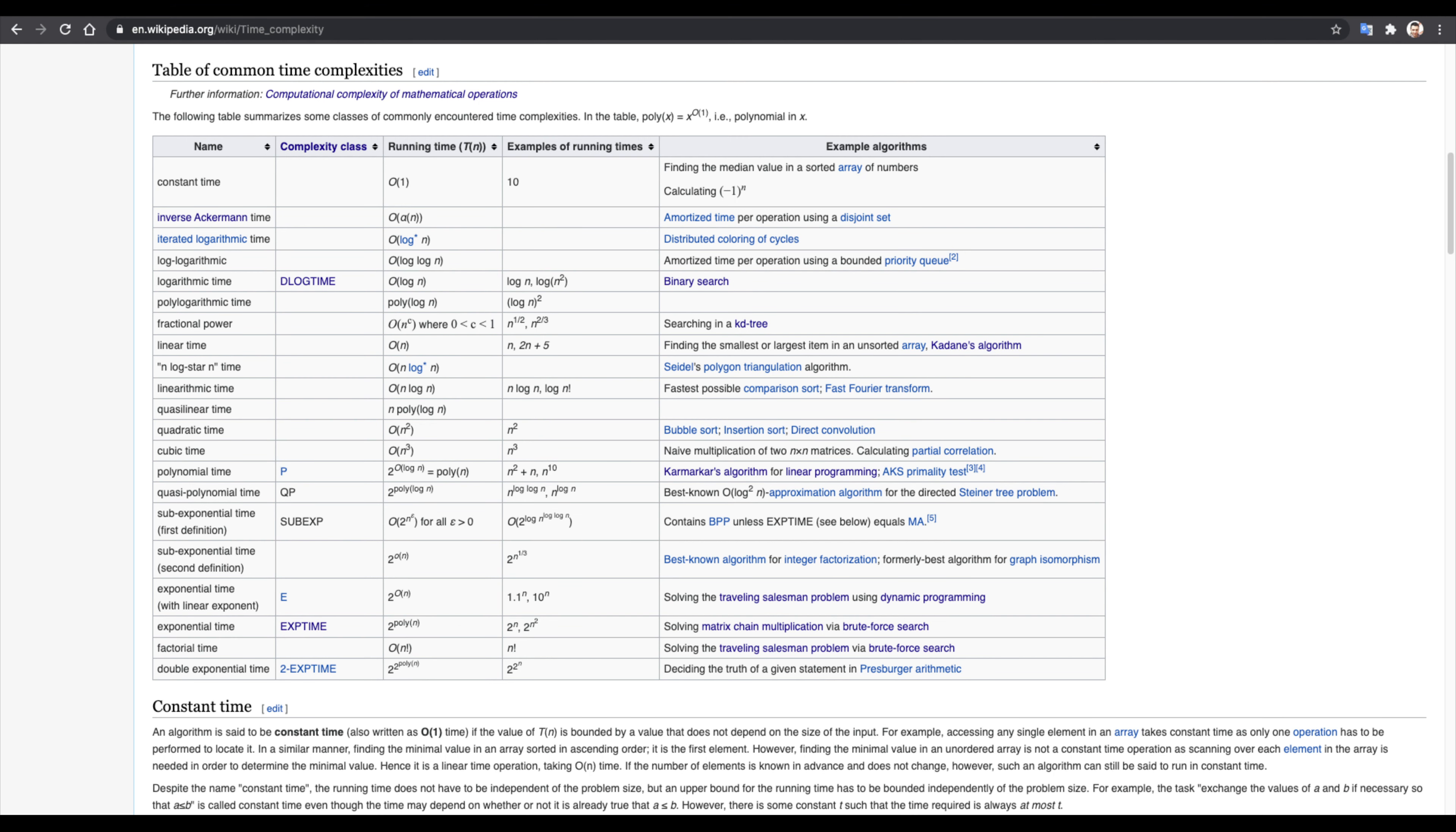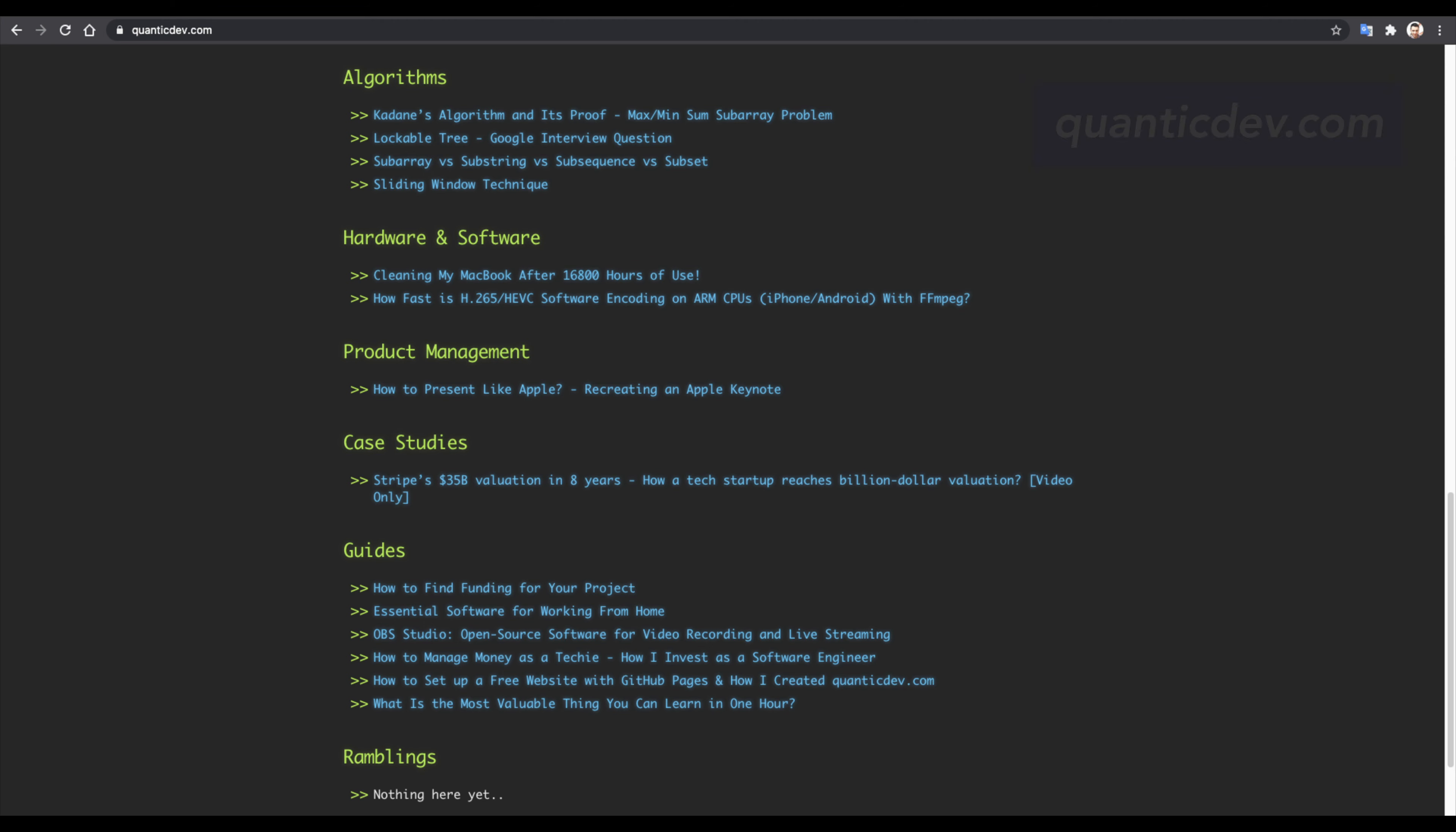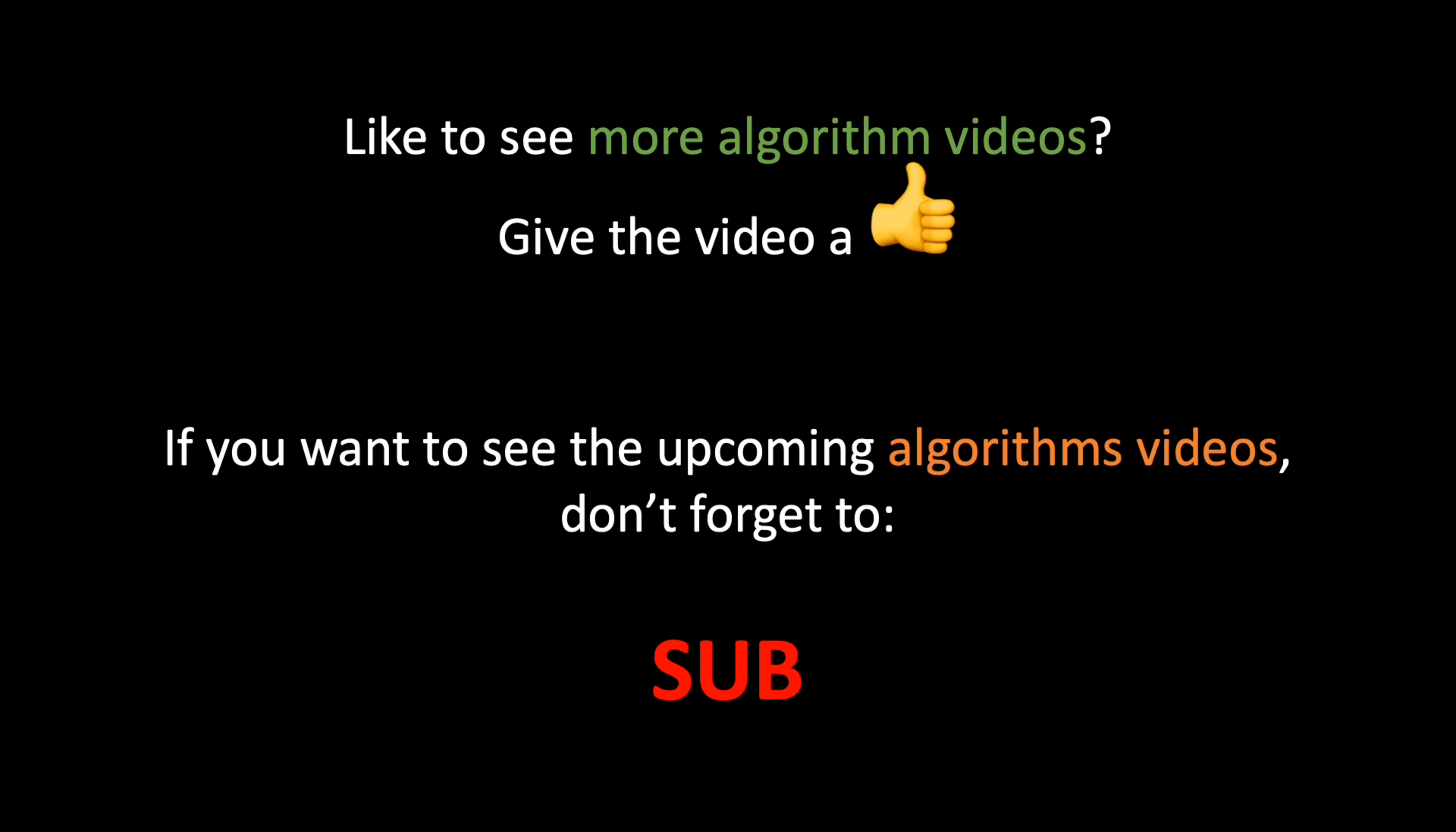Conclusion. Big O notation list goes longer than what I covered here. If you want to see the rest of it, check out the Wikipedia link in the description. However, rest assured, it is enough if you are familiar with the ones that I mentioned. The rest gets increasingly rare to see in real world situations. And they are much less likely to appear in an algorithm interview. As always, you can find the written version of this guide in quanticdev.com along with all the other articles. If you want to see the future algorithm videos like this one, don't forget to sub. I will see you on the next one.